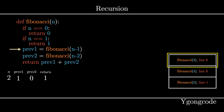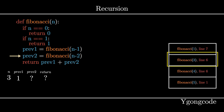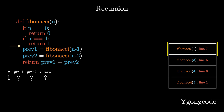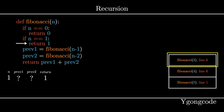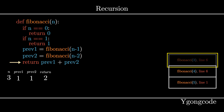At Fibonacci(3), we resume from line 6 and call Fibonacci(1) and add it to the stack. At Fibonacci(1), we hit a base case — we return 1 and pop it off the stack. Back at Fibonacci(3), we sum up prev1 and prev2 and return the result.